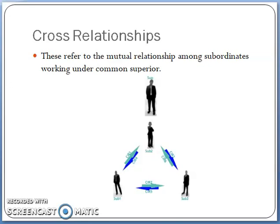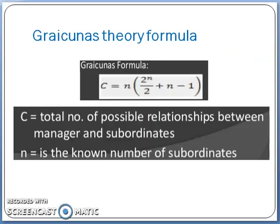To understand the number of relationships and responsibilities of the superior or managers, Graicunas has given a formula to calculate the number of relationships between subordinates and the supervisor. The formula is: C = n(2^(n/2) + n - 1). C stands for the total number of possible relationships between the manager and subordinates. N is the known number of subordinates. For example, if you are working as a supervisor having contact with four subordinates, you can use this formula to find the total number of relationships.